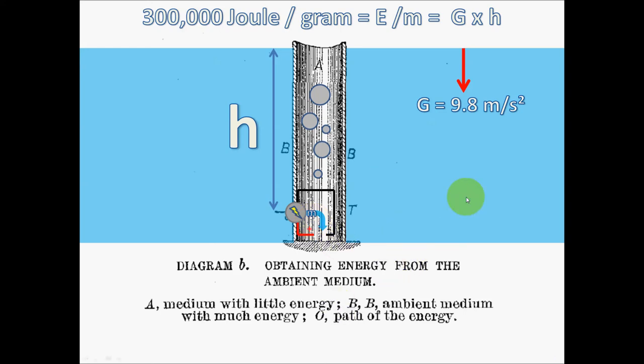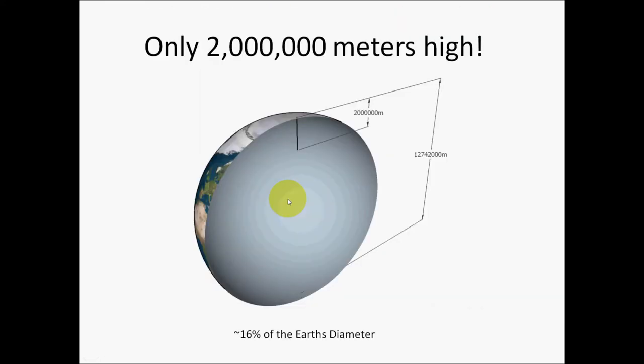So I ran some of the numbers based on how much energy you need to dissociate the water and how high the column would need to be. And I got a rough estimate that this tube, this Tesla tube that would never fill up, would need to be about two million meters high. So that's roughly 16 percent of the Earth's diameter, but it would fit inside the Earth, so that's kind of interesting.